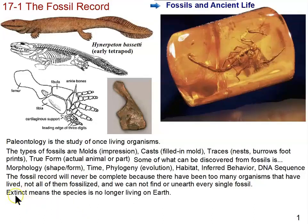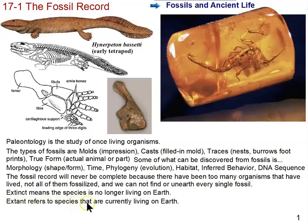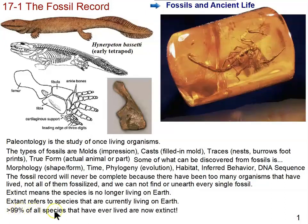Two important vocabulary terms: extinct means a species is no longer living on Earth. The opposite is extant, referring to a species that is currently living. Greater than 99% of all species that have ever lived are now extinct, meaning less than 1% are extant. That's why we'll never have a complete fossil record — so many species have lived over the Earth's 4 to 5 billion year history.